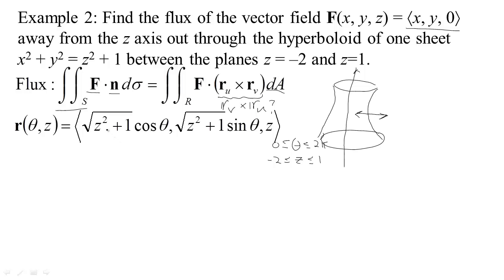So there's our parametrization. Then we can calculate the partials with respect to theta and the partials with respect to z. We did that in a previous problem because we had the same surface and we found out that r sub theta cross r sub z was equal to this quantity.